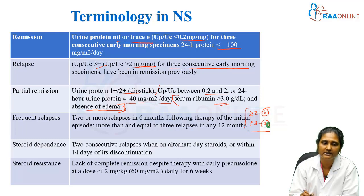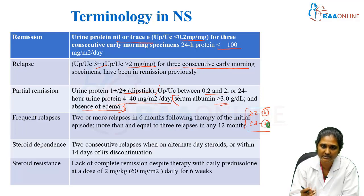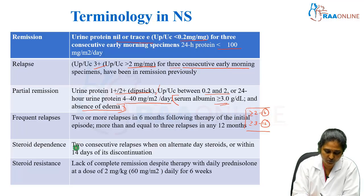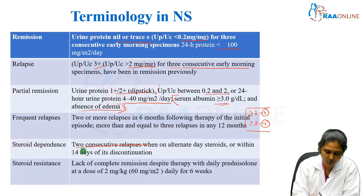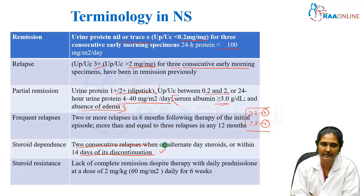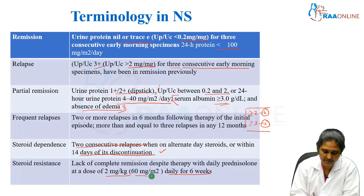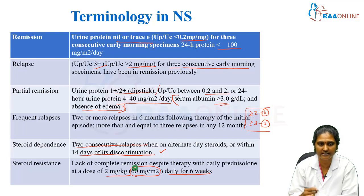When you call it as steroid dependent nephrotic syndrome — when you are giving a daily steroid and after that you are alternating for the next 6 weeks, and while the child is on alternate day steroids they show two consecutive relapses, or when you stopped the 12-week therapy and within 2 weeks of discontinuation again there is a relapse — that means the child is steroid dependent. When you call it as steroid resistant, it is a complete lack of remission despite therapy with daily prednisolone for 6 weeks at a dose of 2 milligram per kg, that is 60 milligram per meter square. That child is considered to be steroid resistant — that is initial steroid resistance.